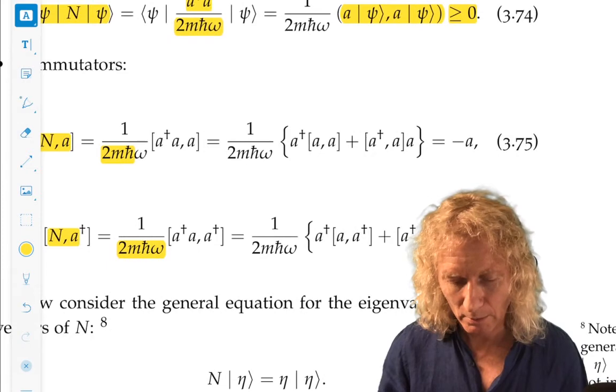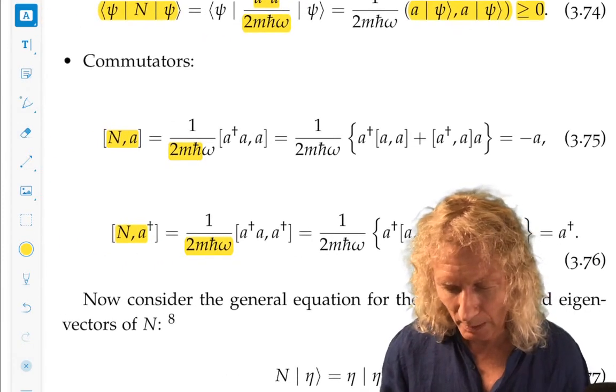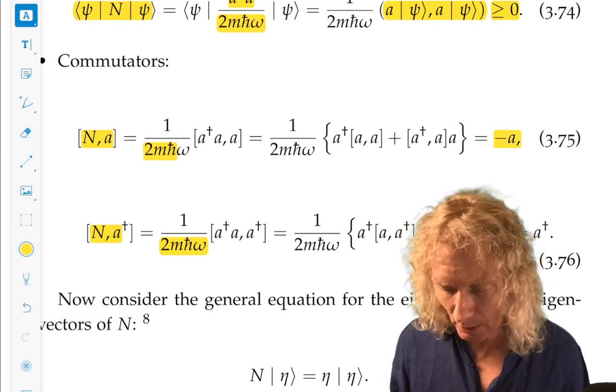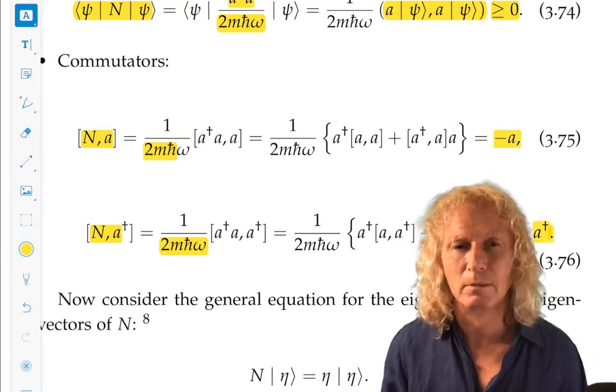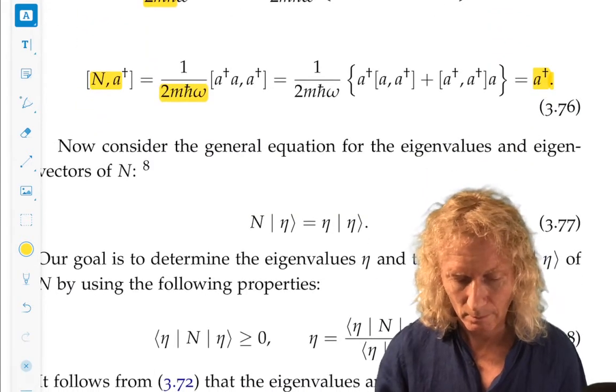So if you work it out, you get the commutator of N with A is minus A. And the commutator of N with A dagger is just A dagger. This is a good exercise for you.